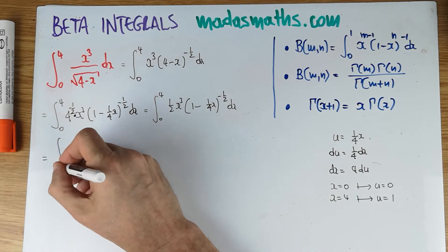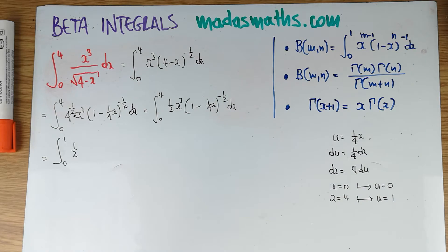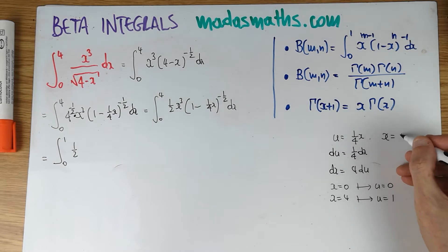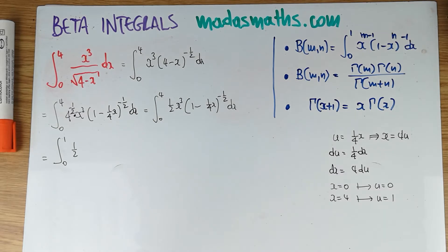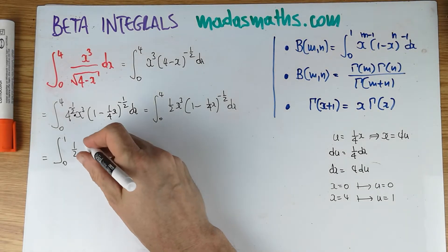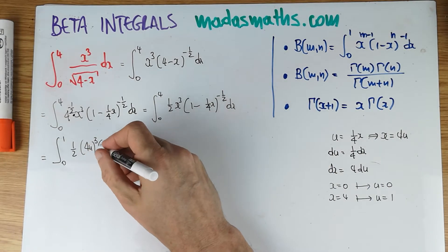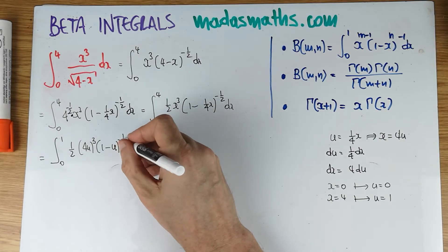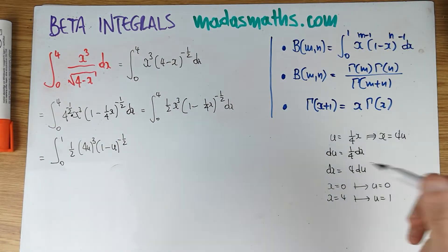So that is equal to 0 to 1, a half. Now x is equal to 4u. So x cubed will be 4u cubed. This now becomes 1 minus u to the power of minus a half. That is that bit there. And the dx is 4 du.